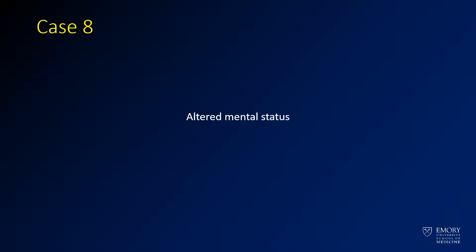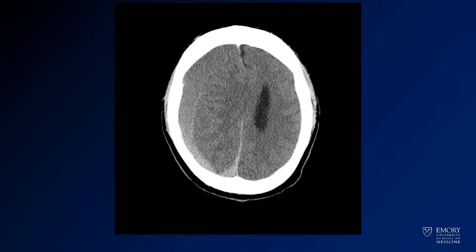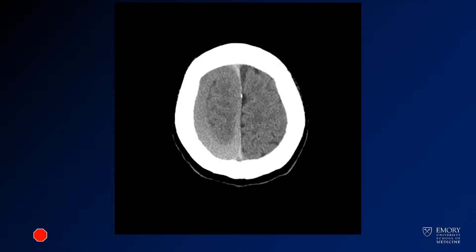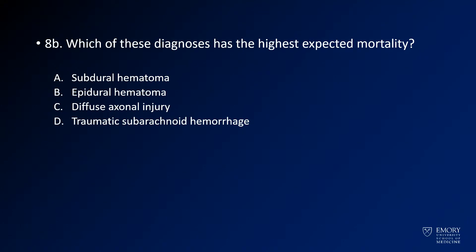For case 8, we have a case of altered mental status with no age given. Here you have images from a CT — just a couple more images that I'll toggle through for you. This is the last image. The question is: what is the most likely diagnosis? And which of these diagnoses has the highest expected mortality?